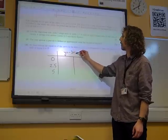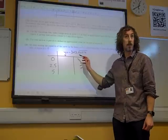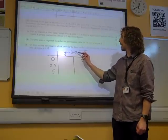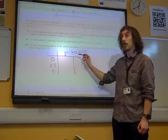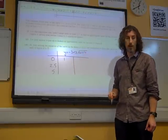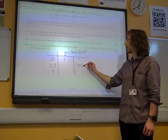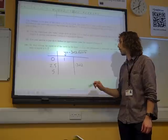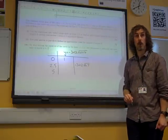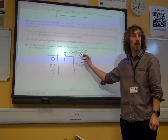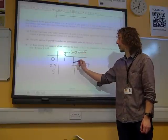y is minus 3 plus 2 root x plus 4. If you sub 0 into that, you get minus 3 plus 2 times root 4, you end up with 1. If you sub 2.5 into that, you get minus 3 plus 2 times root 6.5. And if you sub 5 into that, that gives you root 9, so you get minus 3 plus 6, so you get 3.